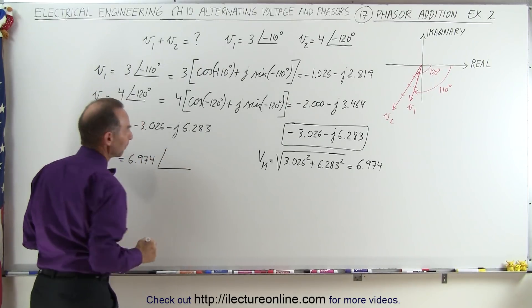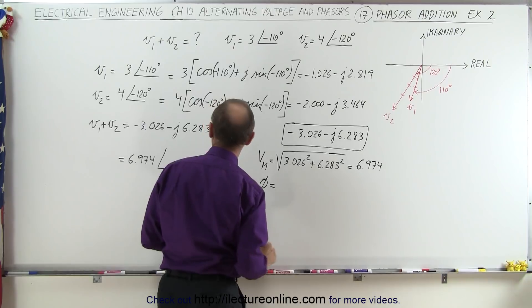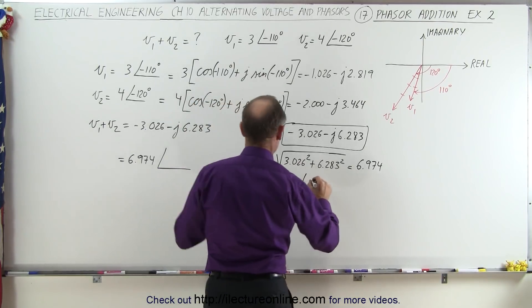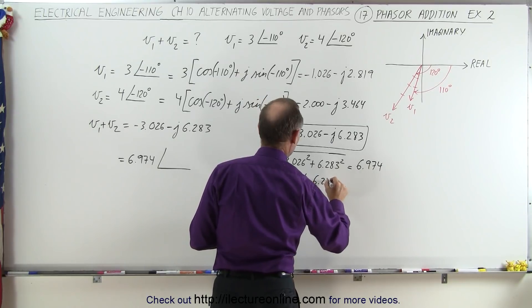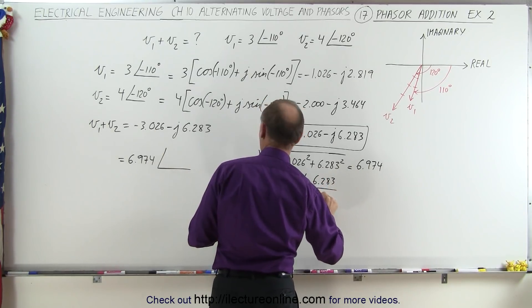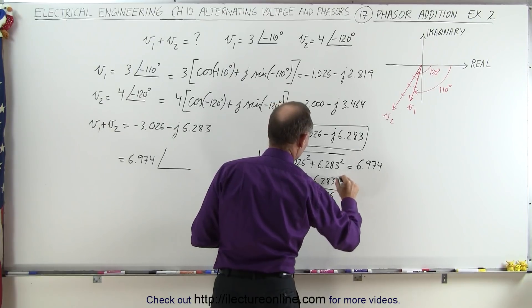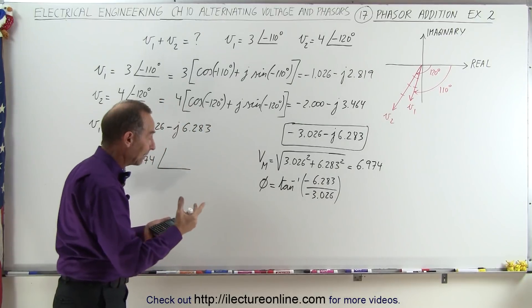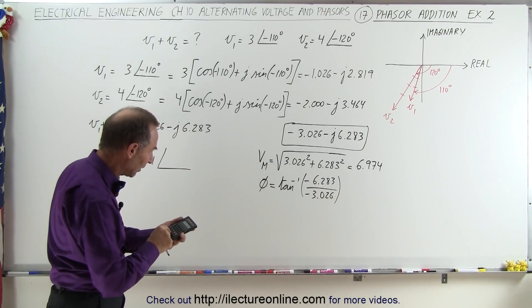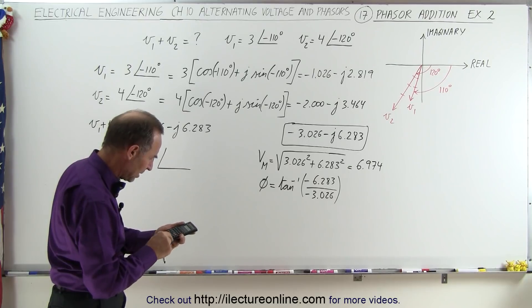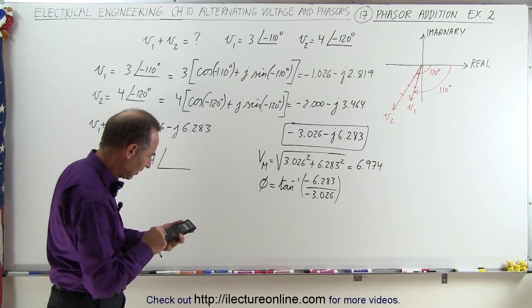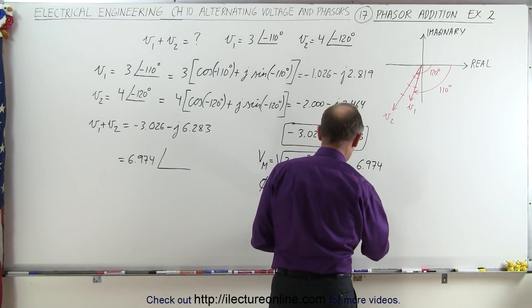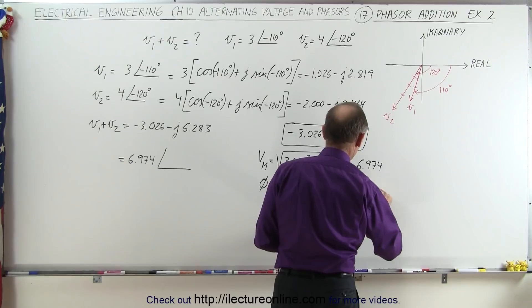Now we need the phase angle. And the phase angle is going to be equal to the inverse tangent of the minus 6.283 divided by minus 3.026. Now here we have to be careful, because the two negatives will cancel out and we'll get a different angle. So let me show you what that means. We get 6.283 divided by 3.026. That gives us a phase angle, if we take the inverse tangent of that, of 64.3 degrees.